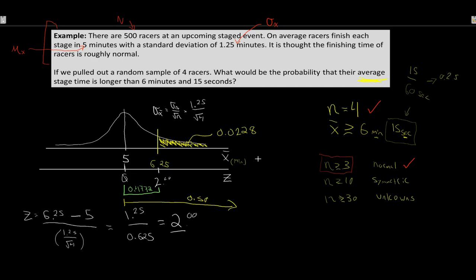That does it for the distribution of the sample mean and the Central Limit Theorem. This topic is really what a lot of the rest of the course is based on. The key thing to practice is differentiating between questions about x being normally distributed versus x-bar, the sample average, being normally distributed — these are very different questions. Do lots of practice with the D2L quizzes and make sure you're comfortable finding areas under the curve and applying the Central Limit Theorem. If you have any questions, feel free to reach out via D2L or email.